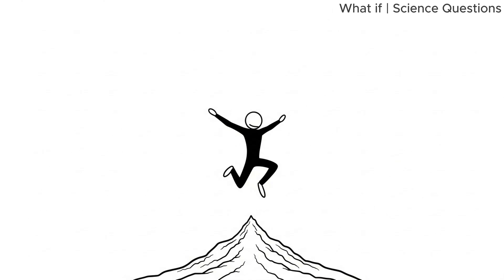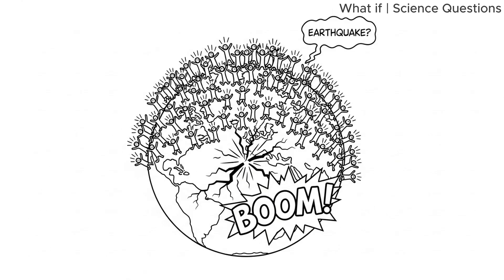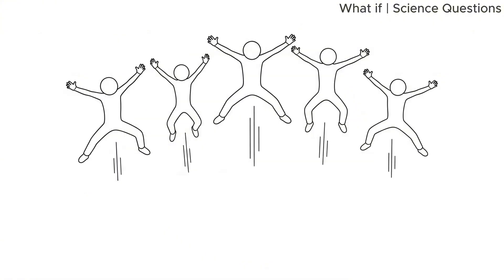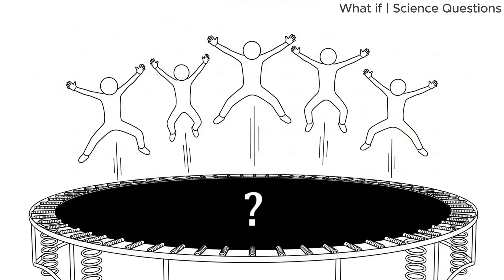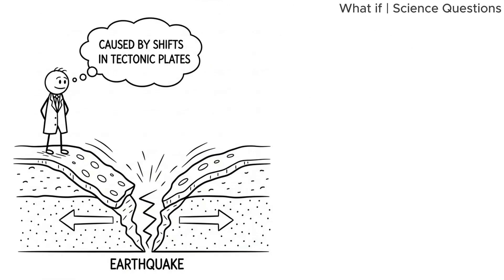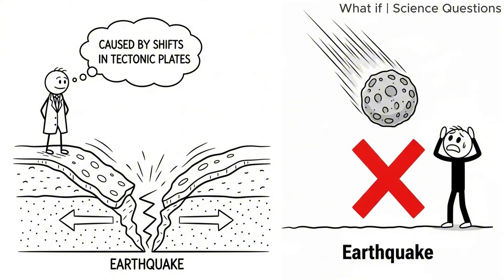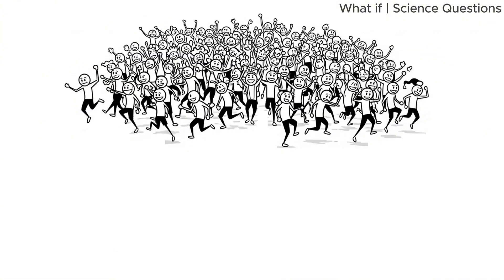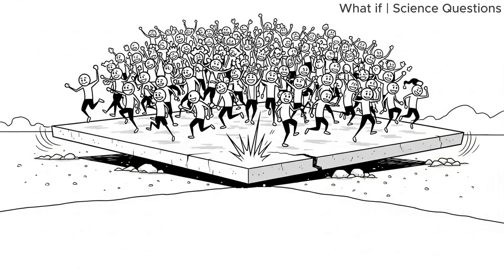But let's say you ignore the planet and just focus on the jump itself. Could 8 billion people jumping simultaneously cause an earthquake? That depends on how well we're synchronized and what kind of surface we're on. Earthquakes are caused by sudden shifts in tectonic plates, not by impacts from above. But if enough people jumped in the same region, say, packed onto one massive concrete slab above a fault line, the vibrations from the impact might simulate a small tremor.